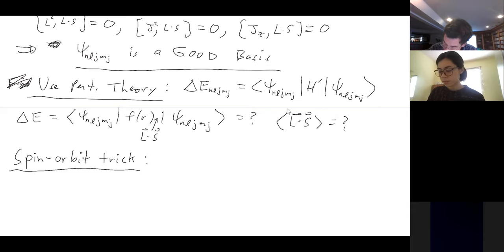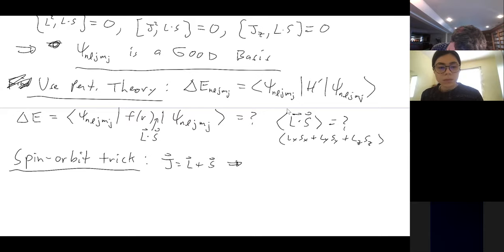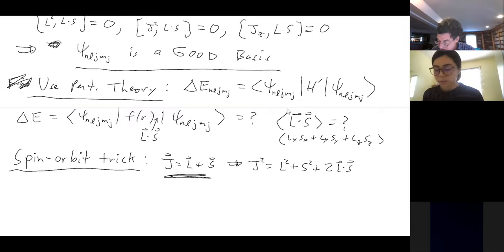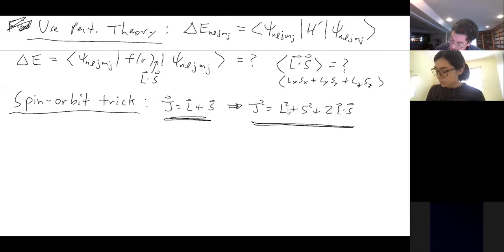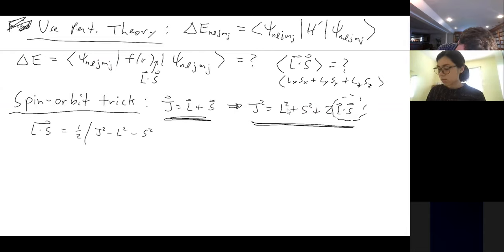Now we're going to use a trick called the spin-orbit trick. Calculating this matrix element is really easy using it. We want to calculate the expectation value of L·S, but L·S is a weird operator — it's L_x S_x + L_y S_y + L_z S_z, and it looks really complicated. But once you add the angular momentum, there's a very simple trick: J = L + S, so J squared = L squared + S squared + 2 L·S. You just squared that expression.